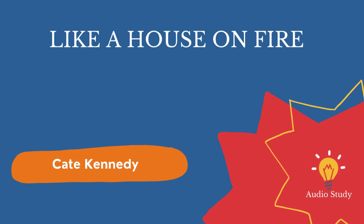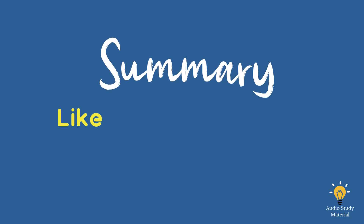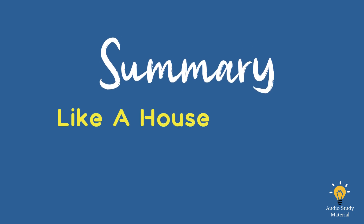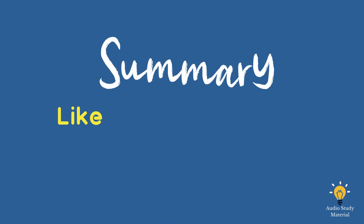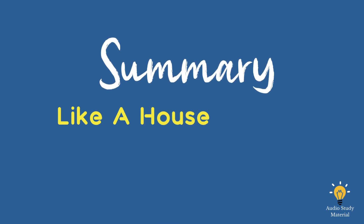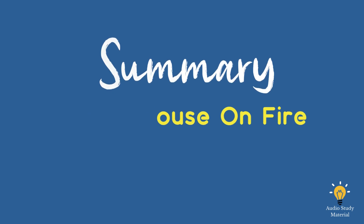Summary of Like a House on Fire by Kate Kennedy. The novel depicts the story of an everyday man whose life is thrown into total collapse after he is involved in an accident at his place of work.